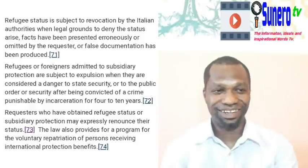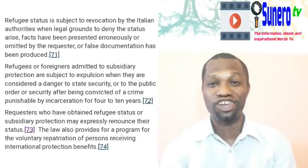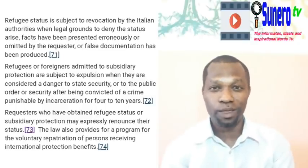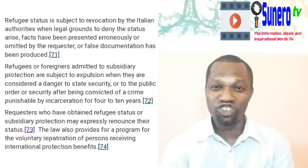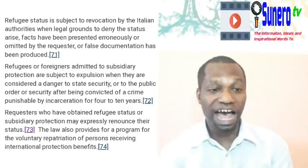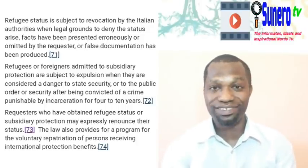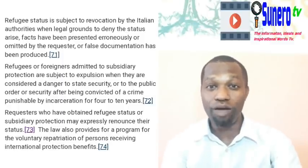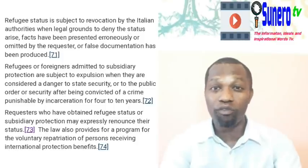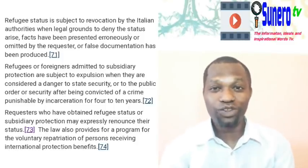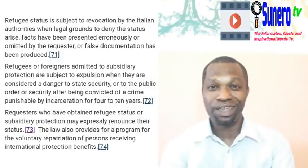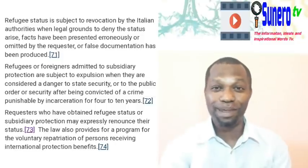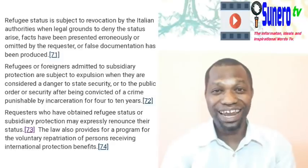Refugee status is subject to revocation by the Italian authorities when legal grounds to deny the status arise. When facts have been presented erroneously or omitted by the requester, or false documentation has been produced, they can revoke it. The commission is still reviewing documents — some people got their document, and after one or two years the questura called them back, telling them the commission had revoked their protection.